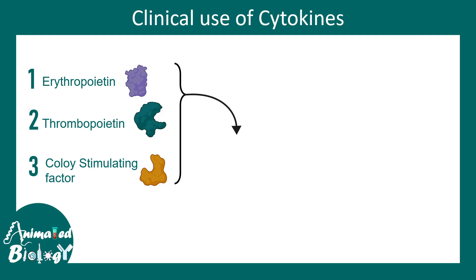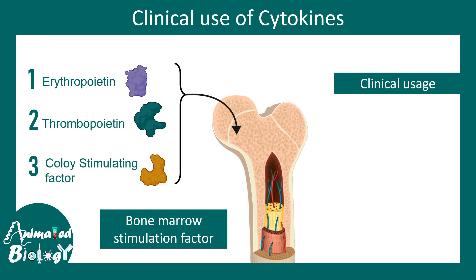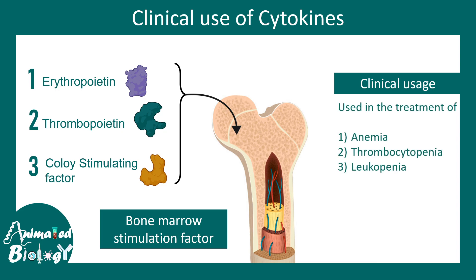All of these cytokines somehow affect the bone marrow, so they function as bone marrow stimulating factors, and that triggers several blood-related processes. They are used to treat blood-related issues — for example, they are used to treat anemia, thrombocytopenia, and leukopenia, which will be detailed and clarified shortly.